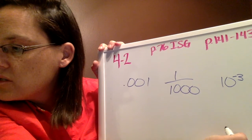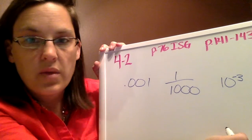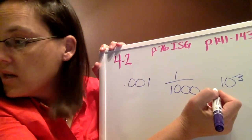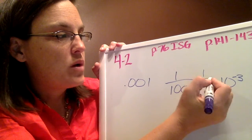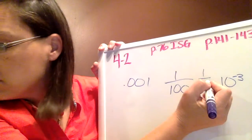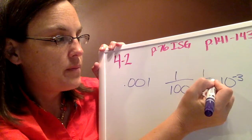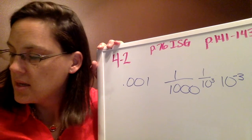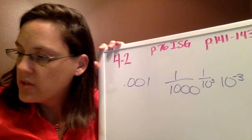And then finally, it says to express with a positive exponent. So I think I got these mixed around. This one should be right here, 1 over 10 to the third power. So a couple different ways to write that decimal that was given to us.